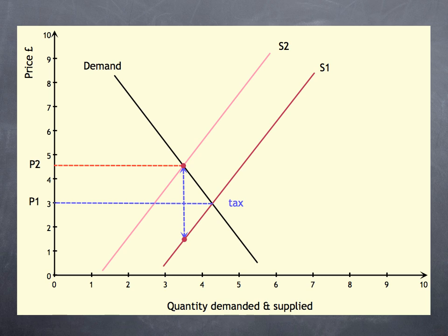Can you see that the tax was £3 per unit? However, the price rise was only from £3 to £4.50, not to £6. This means that the suppliers must have paid the other £1.50.